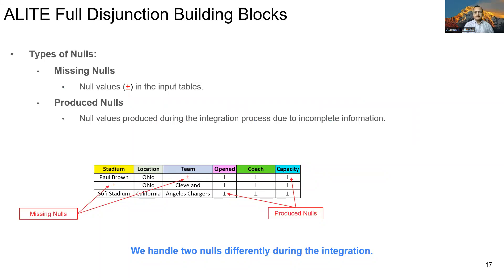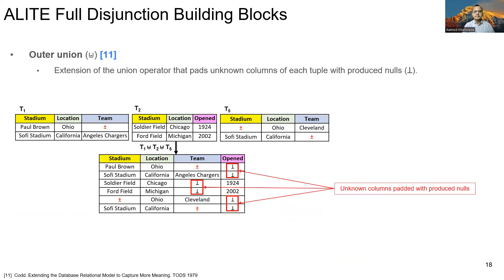Now I briefly explain the building blocks of our full disjunction algorithm. First, we define two different kinds of nulls: missing nulls, which are the null values in the input tables, and produced nulls, which are the nulls that are produced during the integration process due to incomplete information. Note that we handle these two nulls differently during the integration process. Next, I will explain the involved operators. We develop our algorithm using less well-known operators such as outer union, complementation, and subjunction.